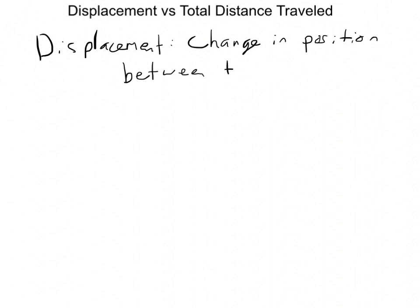In this lesson, I want to talk about the difference between displacement and total distance traveled. Displacement is basically the change in position between times A and B. It's nothing more than how much the object's position changed.